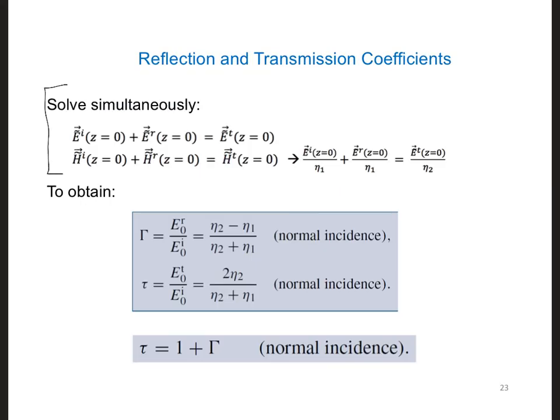So when we solve these two equations simultaneously, this is what we wind up with. This is the reflection coefficient, and we should specify it's for the electric field. Remember, we had a different reflection coefficient for the voltage versus the current for transmission lines, so we're going to have the same thing here. Reflection coefficient for the electric field versus the magnetic field. And here is our transmission coefficient.